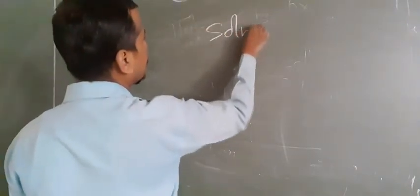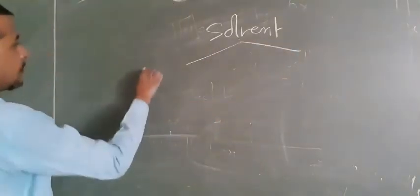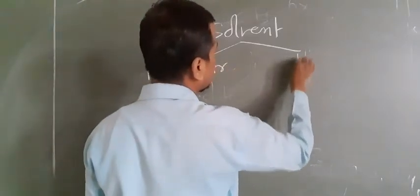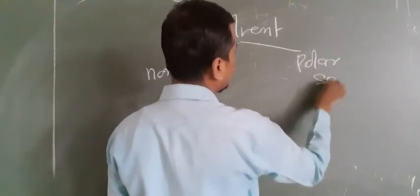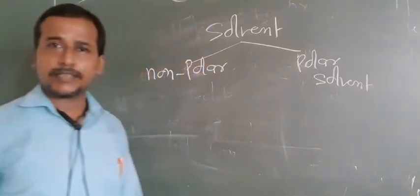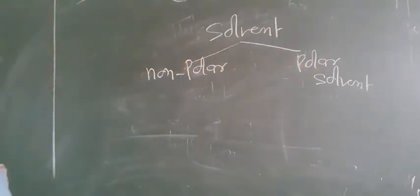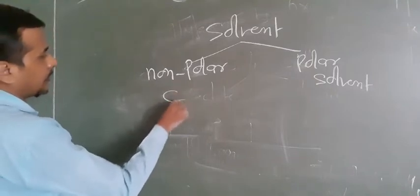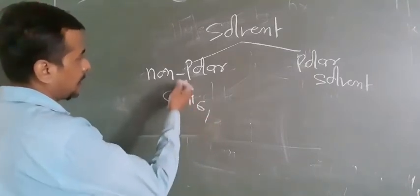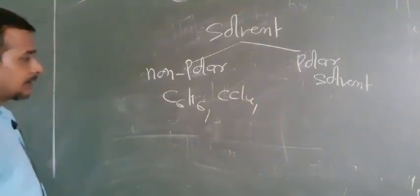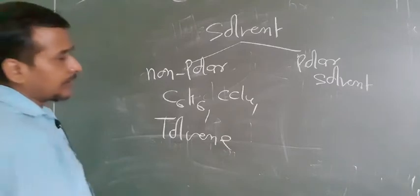Now let us focus on types of solvent. Solvents are basically two types: non-polar solvents and polar solvents. Non-polar solvents have a dipole moment equal to zero. Examples of non-polar solvents are benzene, carbon tetrachloride, toluene, hexane, heptane, and octane.